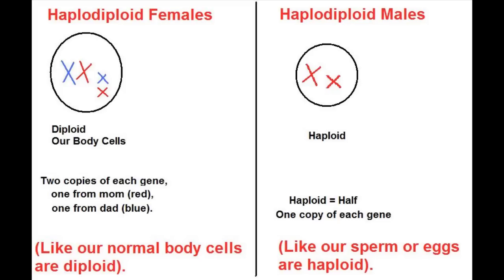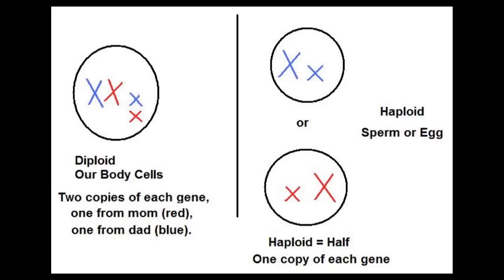Whether they're fertilized by a sperm or not fertilized is the deciding factor. When eggs are fertilized, they're diploid, and these develop into females. If they're not fertilized, they're termed haploid and develop into males.